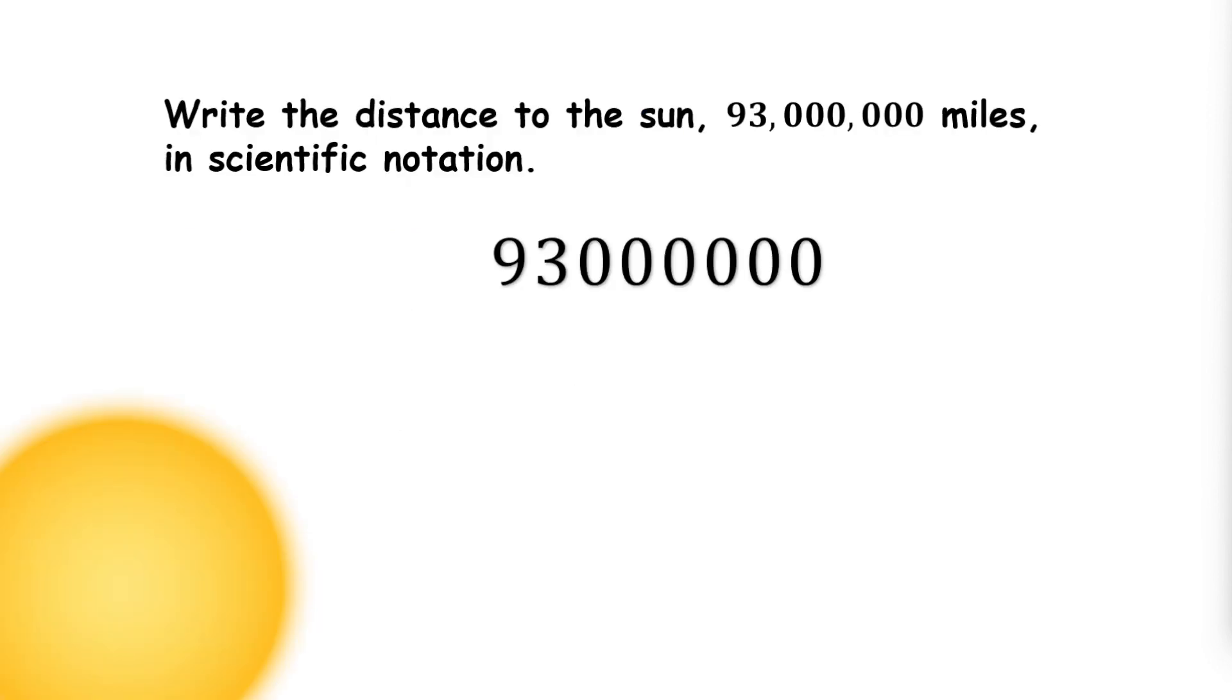Here's an example. Write the distance to the sun, 93 million miles, in scientific notation. Remember the first factor has to be less than 10. Where should we place a decimal point?